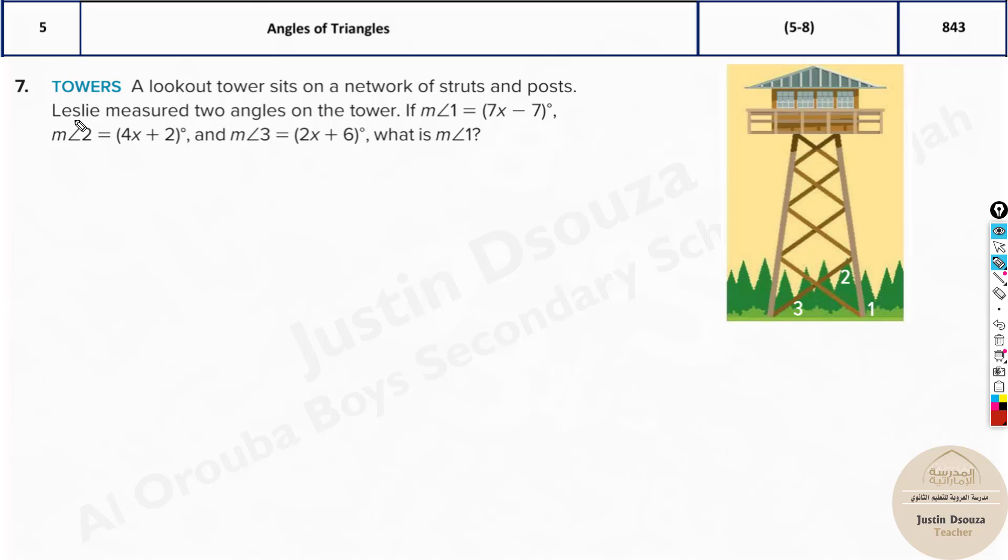We have a real world problem. It's about towers. A lookout tower sits on a network of struts and posts. So struts is the support which is there, and posts. Leslie measures two angles on the tower. Measure of angle 1 over here is 7x minus 7, and measure of angle 2 over here is given, 4x plus 2. And measure of angle 3 is also given. What is the measure of angle 1? So this angle is required to be found out.